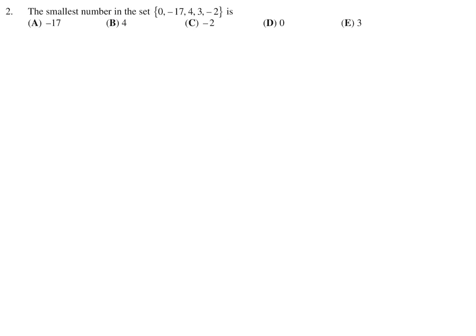The smallest number in the set 0, negative 17, 4, 3, and negative 2 is. Well, the largest is 4. And then if you go in order decreasing, you would have 3, and then 0, and then minus 2, and minus 17. That would be from smallest to largest. So the smallest, of course, is minus 17, which is choice A.